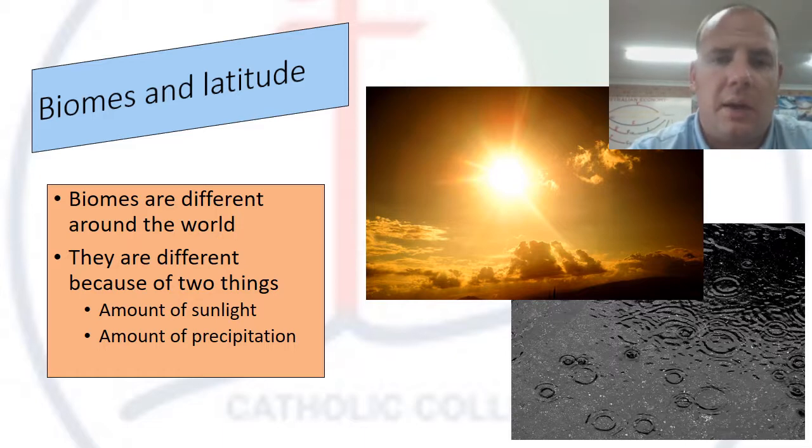Latitude is the number of degrees north and south of the equator. This affects biomes because it affects the amount of sunlight and the amount of precipitation a biome gets, and that's why they're very different.